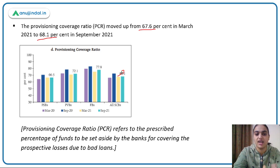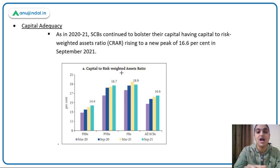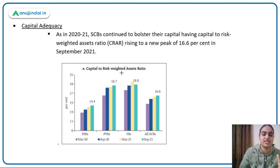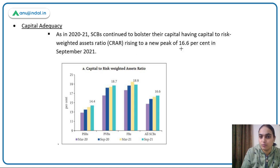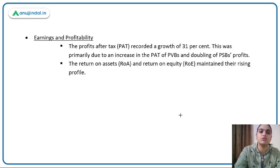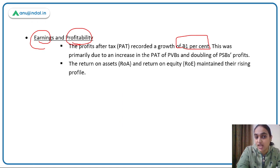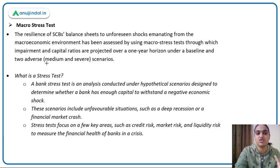On capital adequacy: Scheduled Commercial Banks have maintained more capital, with the ratio rising to a new peak of 16.6%, showing a rise in capital maintained against risky assets. On earnings and profitability: profits after tax have recorded growth for both private and public sector banks; return on assets and return on equity have both risen. Earnings and profitability have improved for the banks.